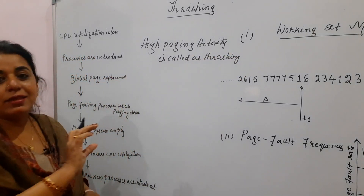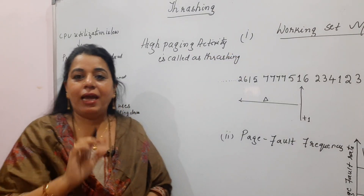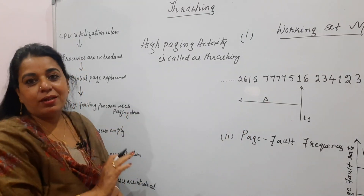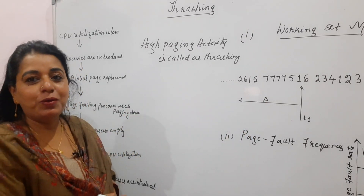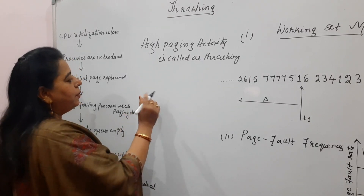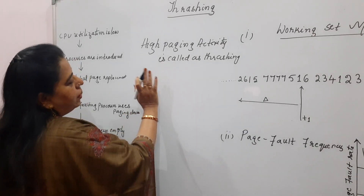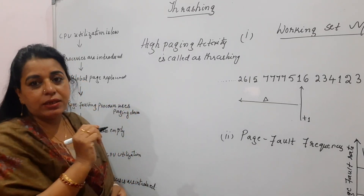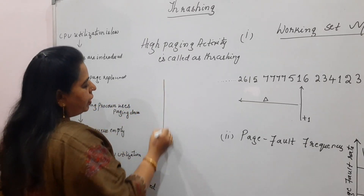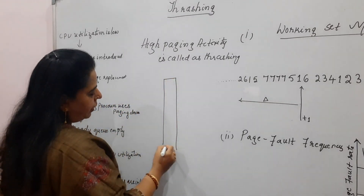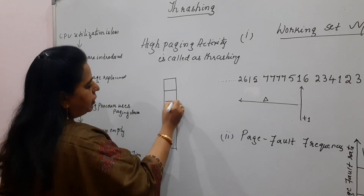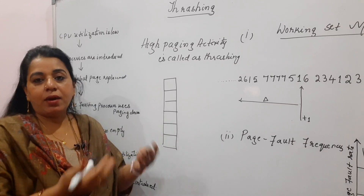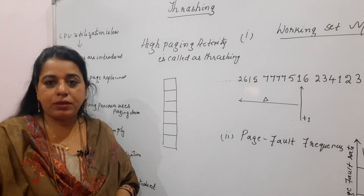Now, to understand the phrase 'high paging activity,' I will explain with an illustration. Time being, you can ignore the other diagrams already on the board — I shall come to those later. In this topic, to make you understand the concept, recall that main memory is divided into equal-size partitions called frames, and the frames are allotted to different processes.